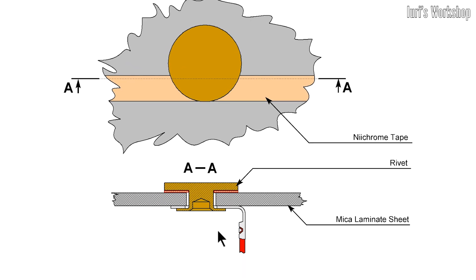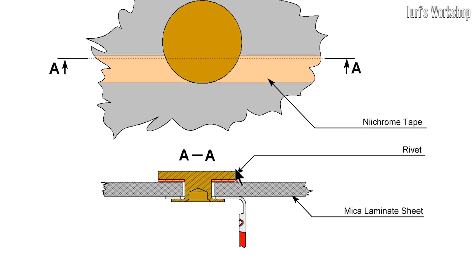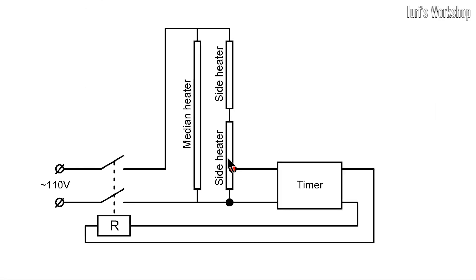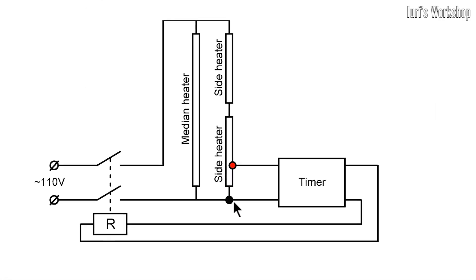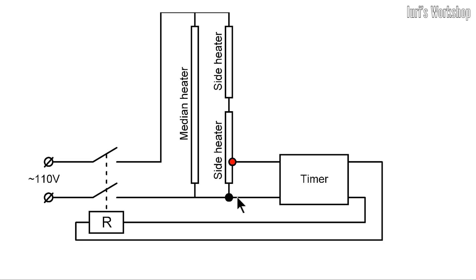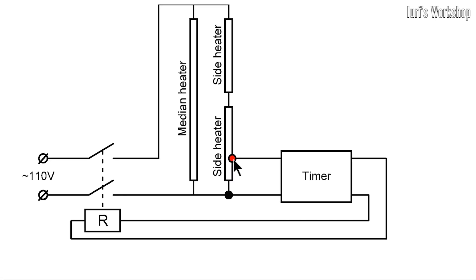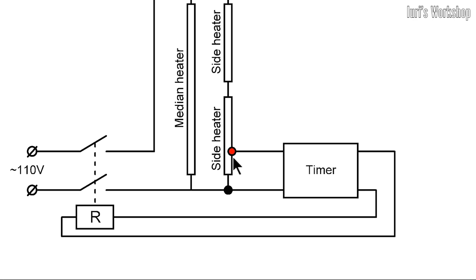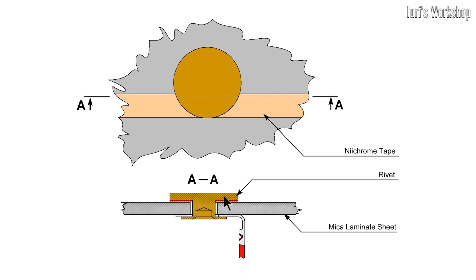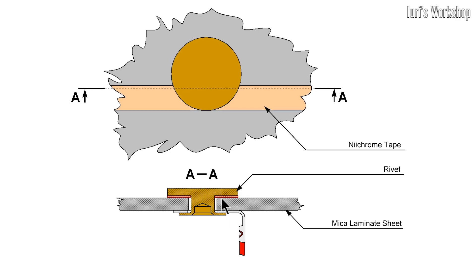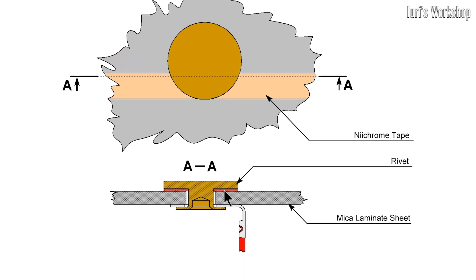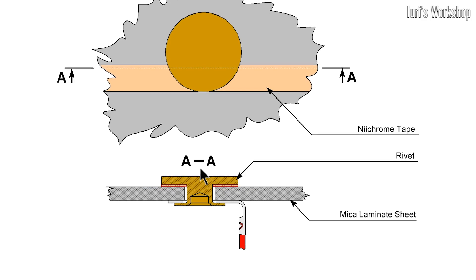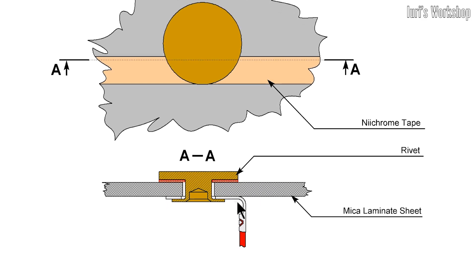The weak point of this connection is the contact between the rivet and the nichrome tape. The point is that the potential difference between these voltage divider pins is only 10 to 20 volts. And this voltage is not enough to penetrate the oxide layer that eventually forms between the nichrome wire and the rivet. And it is through the body of this rivet that the power to the timer board is supplied.